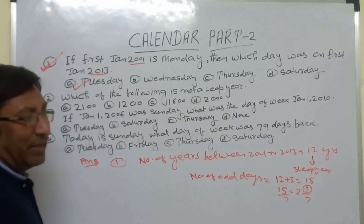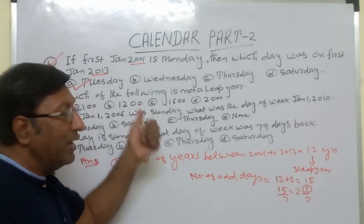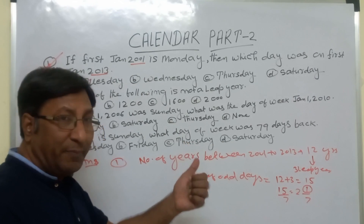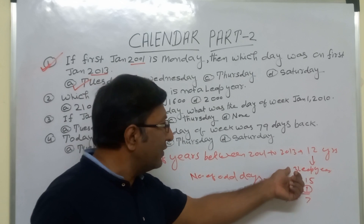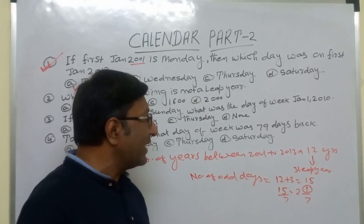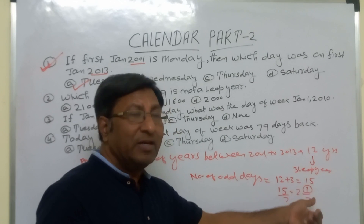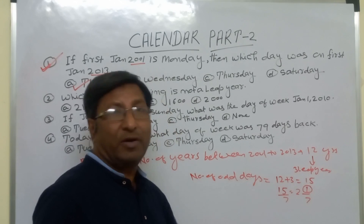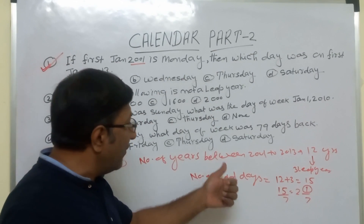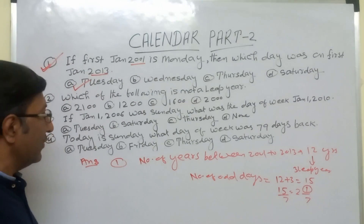For this type of question, the simple technique is: Jan 1, 2001 to Jan 1, 2013 — date and month are the same, so only find the number of year gaps, then find how many leap years and how many normal years. Here leap years are 3, normal years are 9, so 9 plus 6 equals 15. Or directly: 12 years plus 3 leap years gives 3 extra days, so 12 plus 3 equals 15. Divide by 7, remainder is 1. Monday plus 1 day is Tuesday — that is our correct answer.